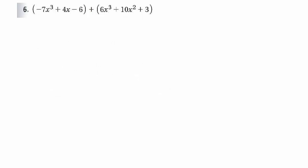For number 6, notice that we have an x cubed and an x cubed and an x, but there's not an x squared in the first polynomial — though this one does have an x squared. So be careful that you don't accidentally combine those. Just because it's the second term and the second term doesn't mean you can combine them. The x cubed terms we can combine — negative 7 and positive 6 make a negative 1 x cubed.